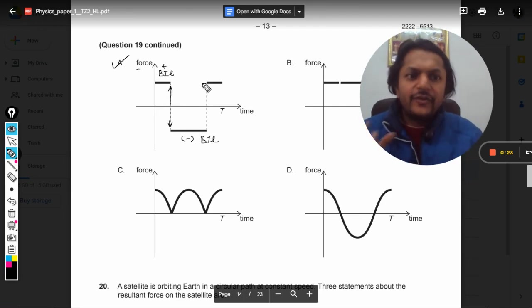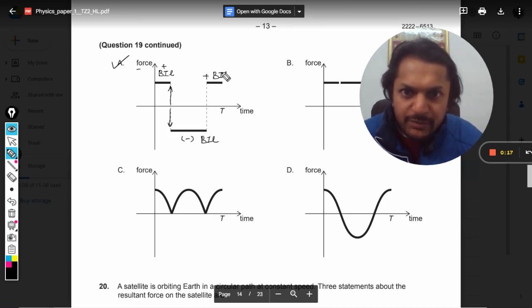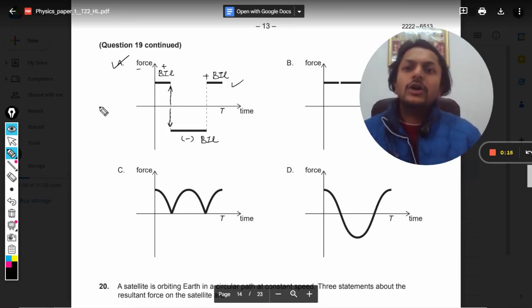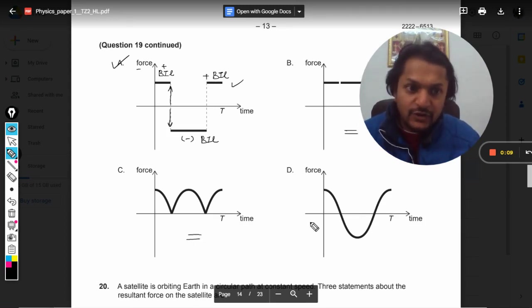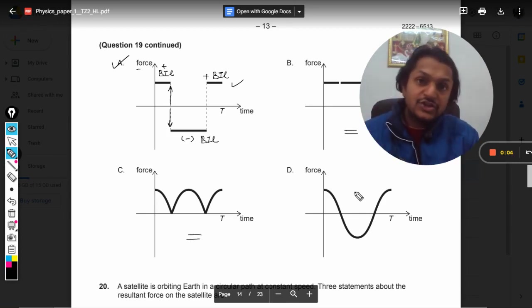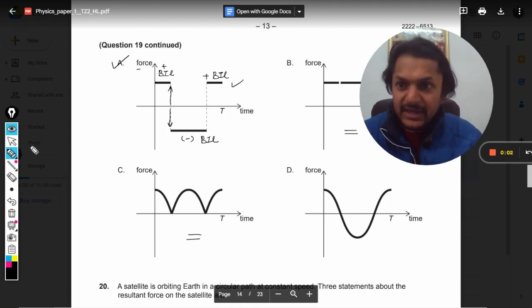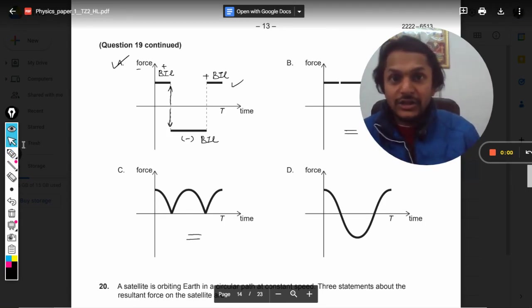And again for the rest of the cycle, that is one fourth cycle that will be left, the force is again becoming positive BIL. So our answer is A. It is not B because no negative values. It is not C because no negative values. And here the force is variable, but in our case force is constant. So the answer is A. All the best.